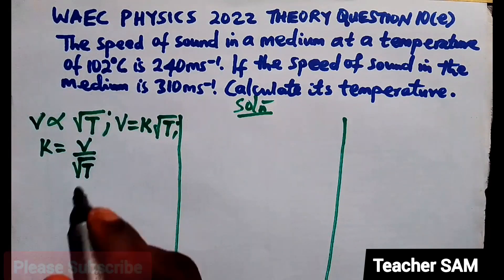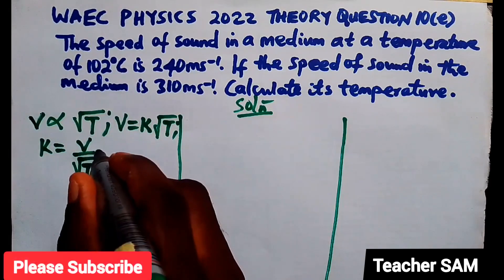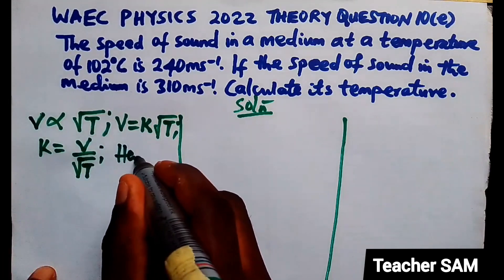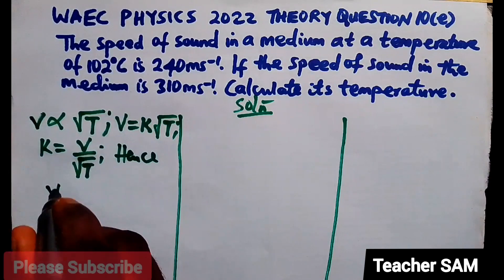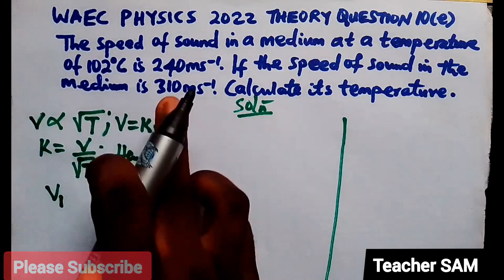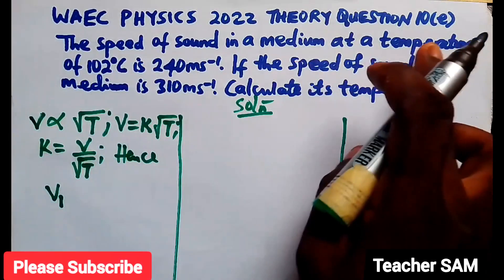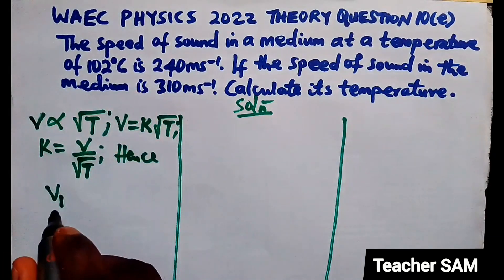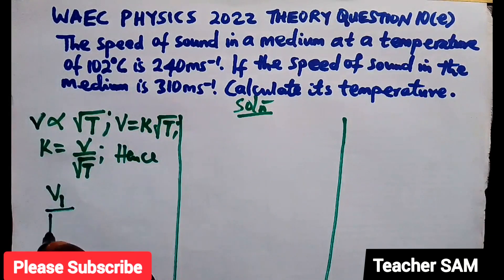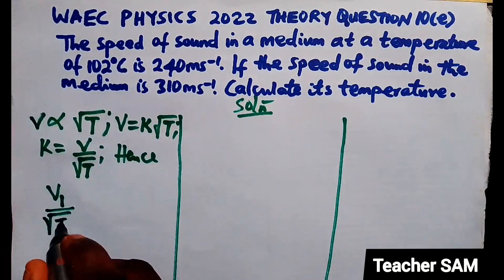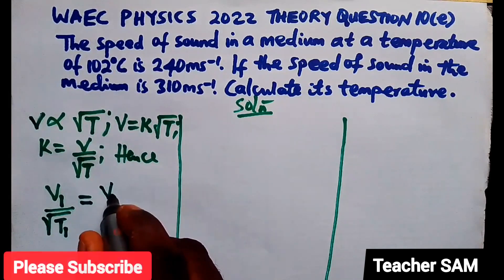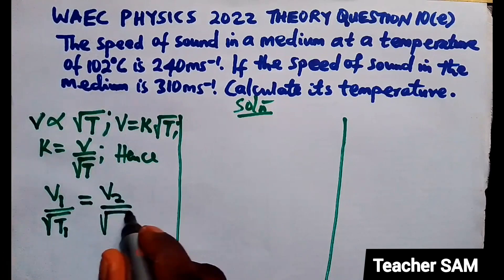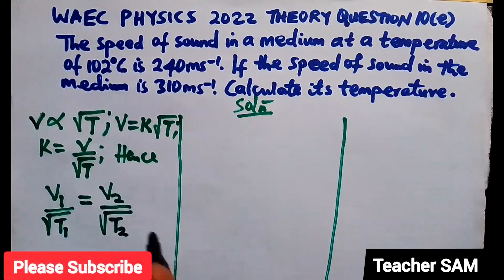So, we have this. Now, since we already know this, we can then say, hence, since we have this, we can say that V1, since we have two mediums here, we have first medium, we have another medium. So, we can say V1 all over square root of T1 equals to V2 all over square root of T2.